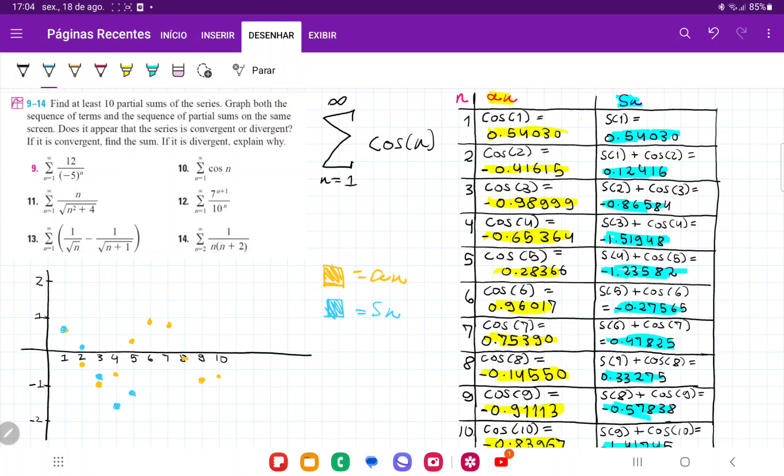Minus 0.27 for, let's see, for S6, okay, here. And then 0.47 for S7, so about like so.